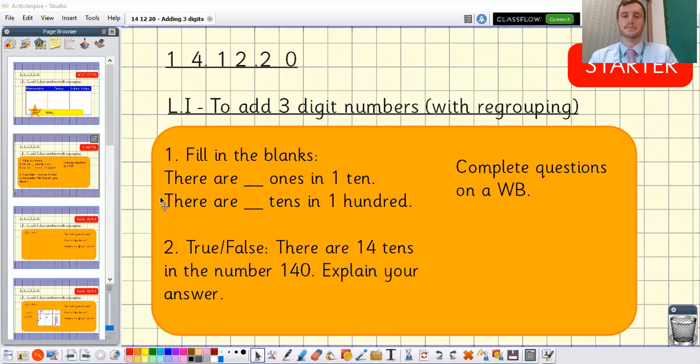We will come back together there. The first one, there are 10 ones in 1 ten is what you should have had and there are 10 tens in 100. It's good for us to keep recapping on that and it helps us with that regrouping in adding and subtracting. True or false there are 14 tens in the number 140. As long as you've justified your answer you could argue true or false. Usually we would do 1 hundred, 4 tens and zero ones to make 140. But 14 tens could be regrouped into one extra hundred and four tens. So it is just a different way of showing it before that regrouping has taken place.